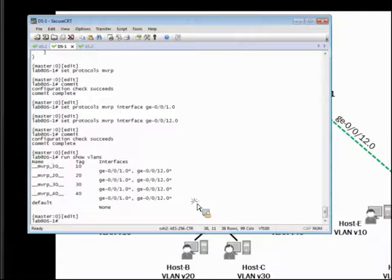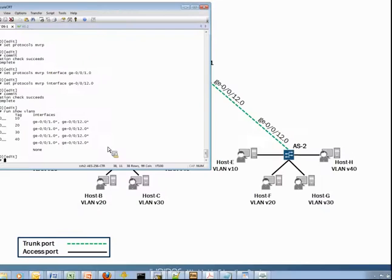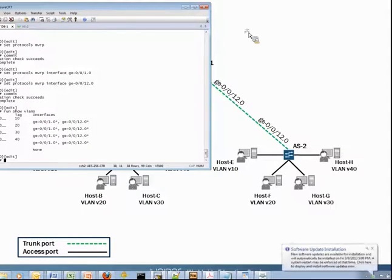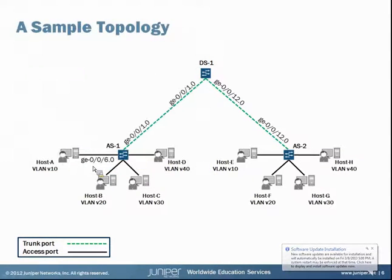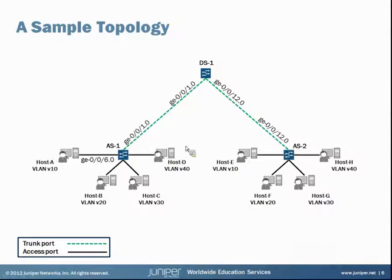With this in place, these trunk ports connecting the access switches with DS1 can now service all four VLANs — V10, 20, 30, and 40. So all of those should be serviced at this point.